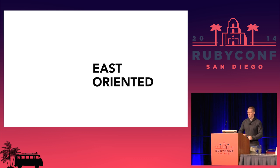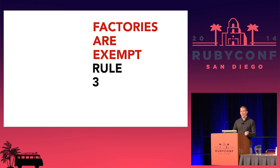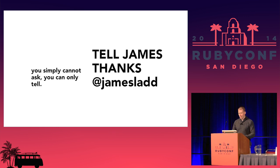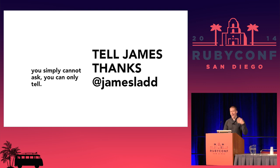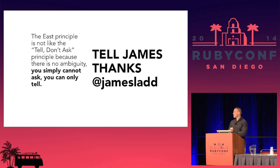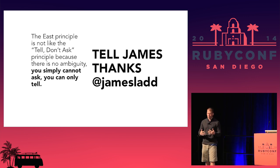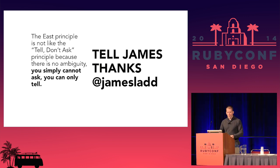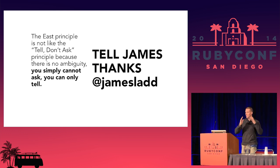So to be east-oriented: always return self. Objects can query about themselves. Factories are exempt. Break the rules sparingly, like in value objects. James Ladd is on Twitter — I'd love it if everybody said thanks to him for coming up with this idea and adding a way we can enforce Tell Don't Ask in our programs. The difference is: you must tell. If you're returning self and you hide information about an object so it cannot be queried, then there's no other option.